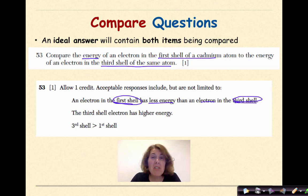Now, personally, I'd rather see that say the third shell electron has higher energy than the electron in the first shell. But you know what? That's okay. Like I said, this is an ideal situation. And finally, electrons in the third shell will have greater energy than electrons in the first shell. So again, like I stated before, an ideal answer will contain both items being compared.